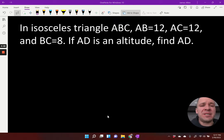All righty, an isosceles triangle ABC. We've got AB equals 12, AC equals 12, and BC equals 8. Remember, they don't have the segment lines on top. We're talking about lengths for those segments. If AD is an altitude, we want to find AD.